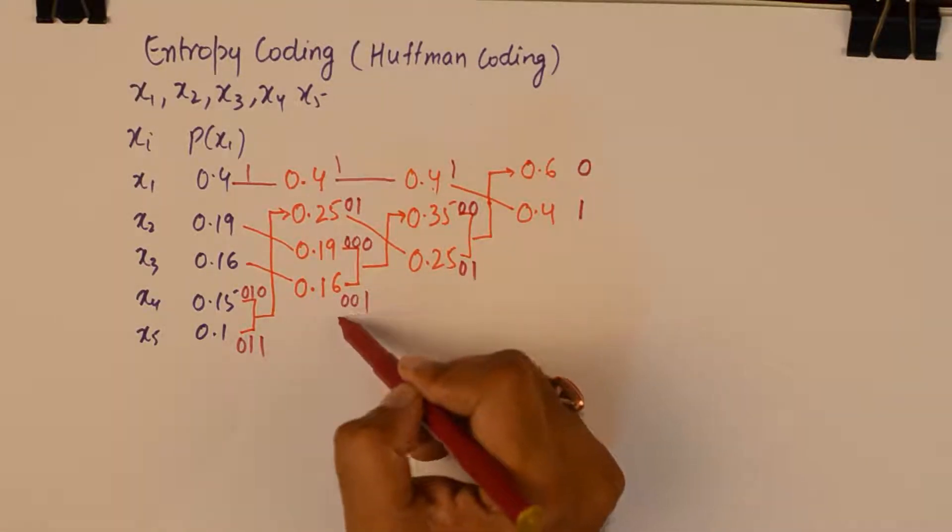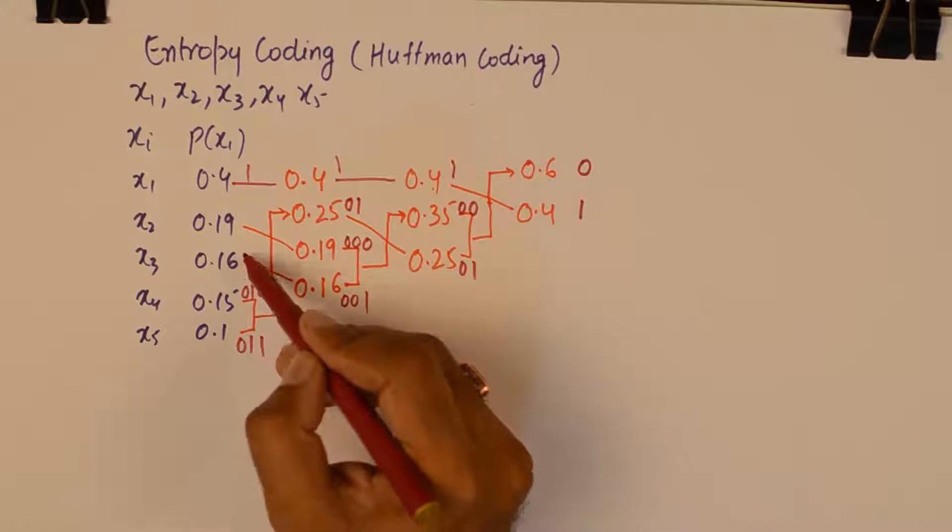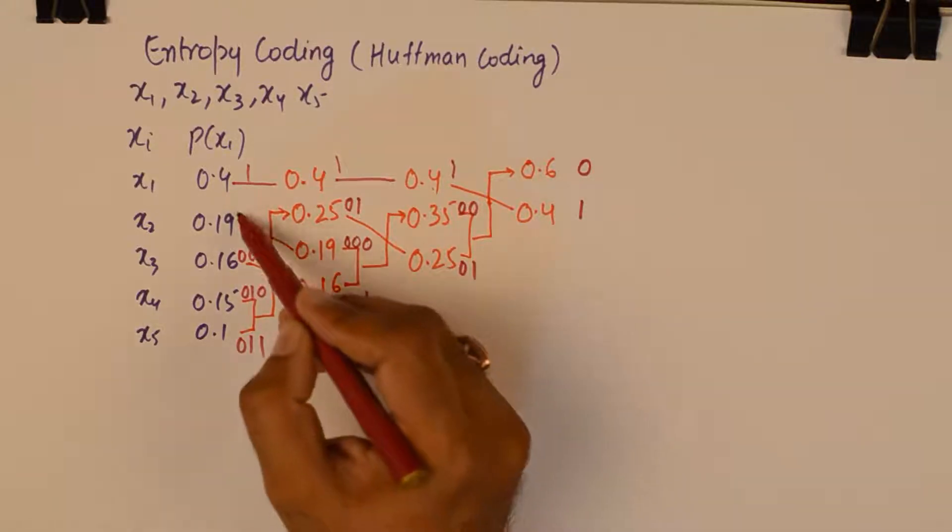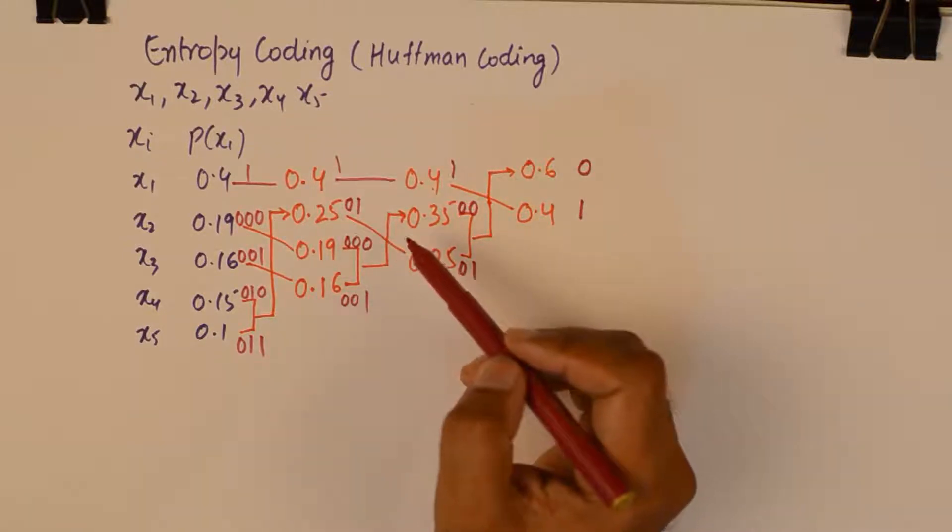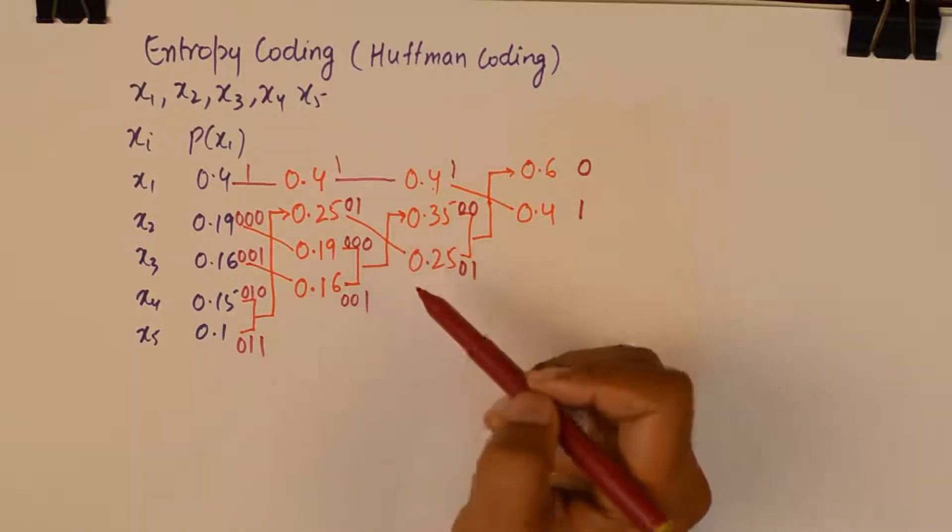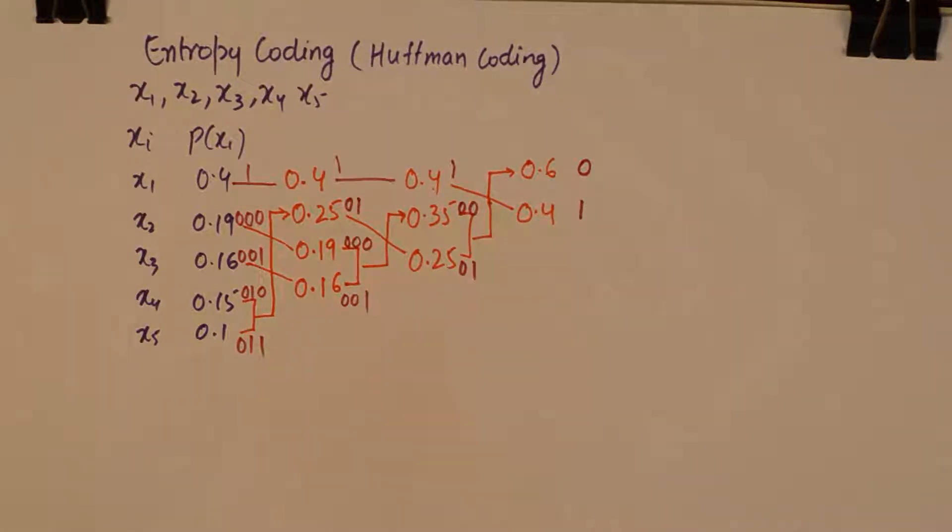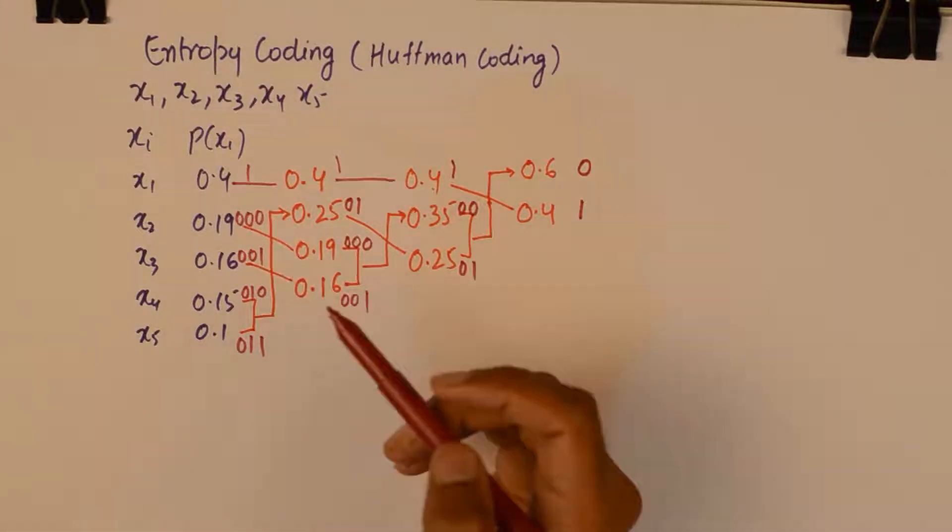And this 0 1 gets transferred to its child as it is. This 1 gets transferred to its child as it is. And yes that's about it. So we have found the code for almost every probability.